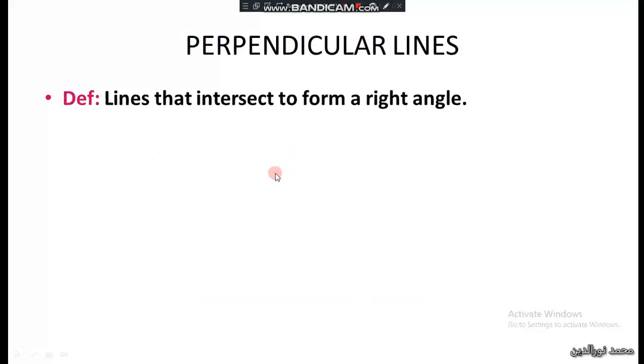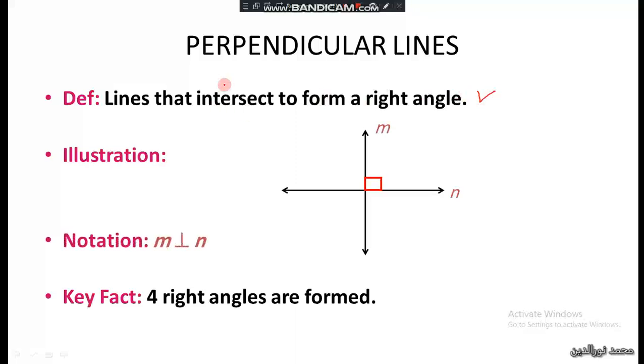Perpendicular lines are lines that intersect to form a right angle. When we say two lines are perpendicular, they are intersecting, and the angle between them is a right angle—that means a 90-degree angle. The notation: M is perpendicular to line N. The key fact is that four right angles are formed.